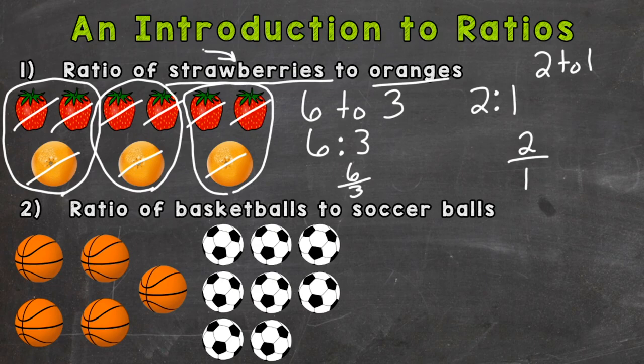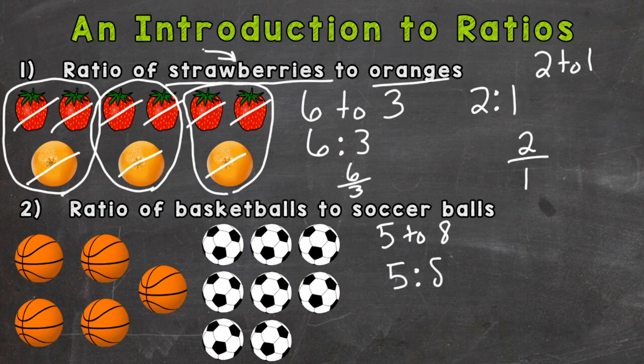So let's take a look at number two: ratio of basketballs to soccer balls. Well, there are five basketballs and there are eight soccer balls. So we could put five to eight, we could use a colon and that represents five to eight, or we could use a fraction, five to eight.